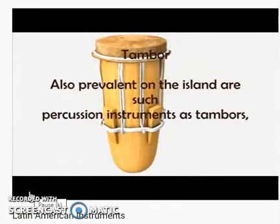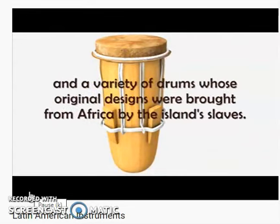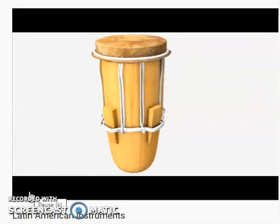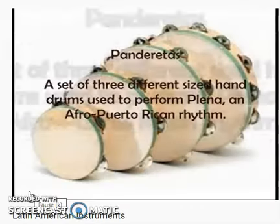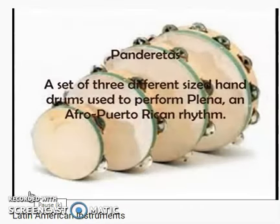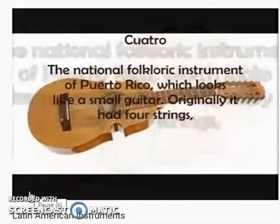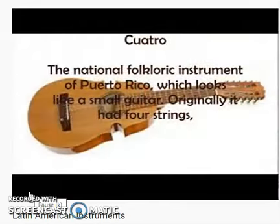Tambor — so this is a percussion instrument, and the African slaves brought it over to Latin America. This is like triangles that we know, and this is the tamborins — sounds like a tambourine.